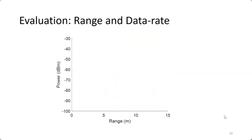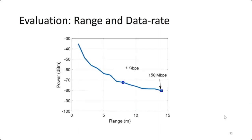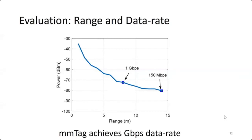For range and data rate evaluation in a real environment, the node was placed facing the access point and its reflected power was recorded at different distances. The X-axis is the distance between AP and node; the Y-axis is reflected power in dBm. The power is high enough for the node to send data at around 1 gigabit per second at 8 meters, and 150 megabits per second at 14 meters. mm-Tag achieves gigabit-per-second data rates.